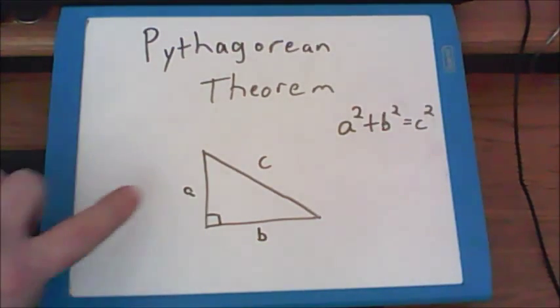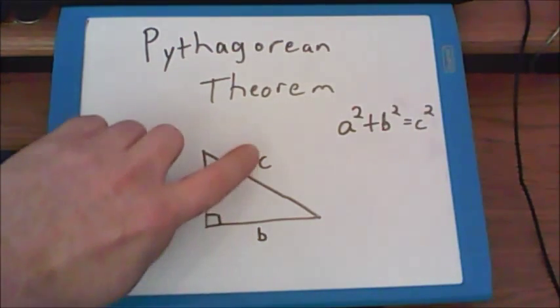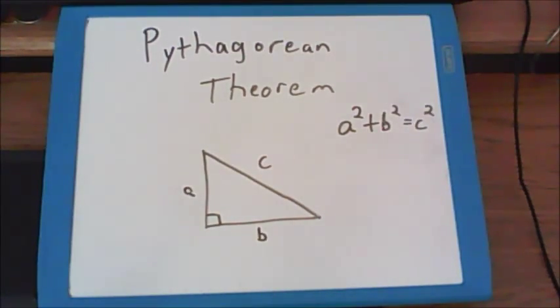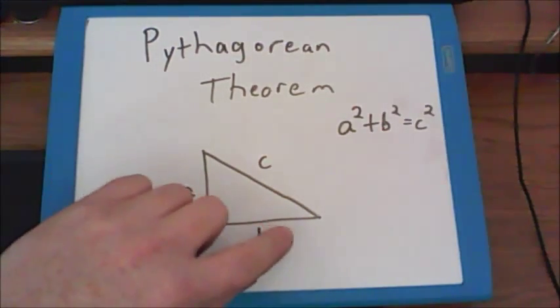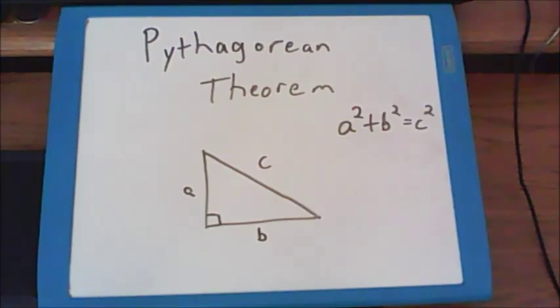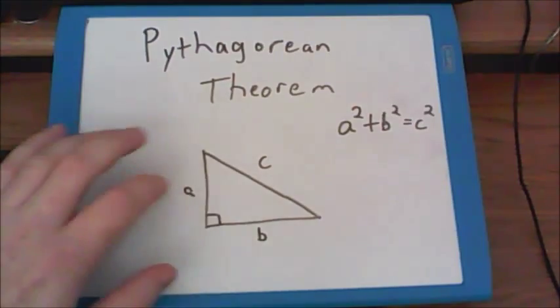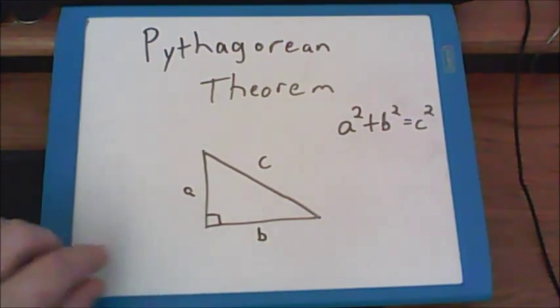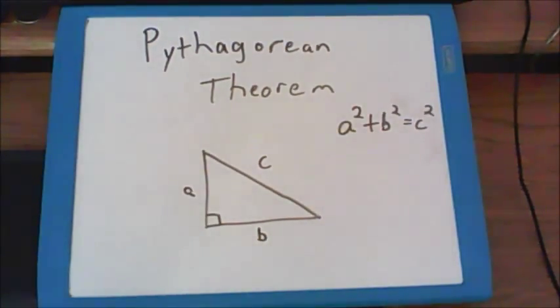And we label the sides like this: a, b, and c. c is always the longest side. It is the diagonal line, and it is opposite the right angle. a and b can be either of these other two sides, but I usually let b stand for bottom and put it there.